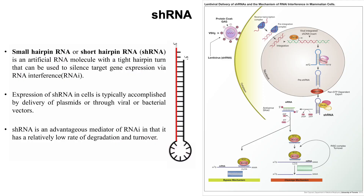shRNA stands for small hairpin RNA or short hairpin RNA. shRNAs are artificial RNA molecules with a tight hairpin structure which can be used to silence target gene expression by the process of RNA interference. Expression of shRNA in cells is accomplished by delivery of plasmids or through viral or bacterial vectors. shRNA is an advantageous mediator of RNA interference because it has a relatively low rate of degradation and turnover.